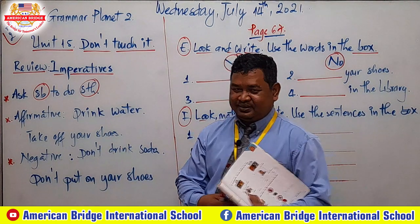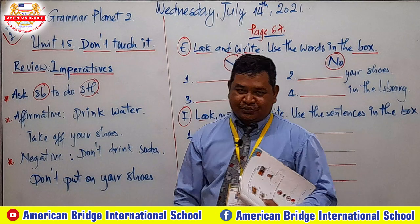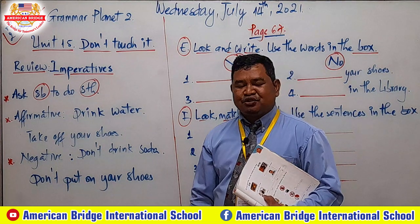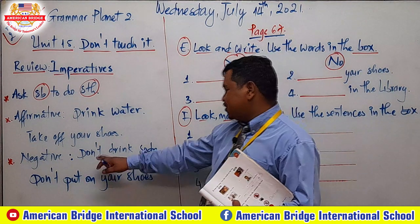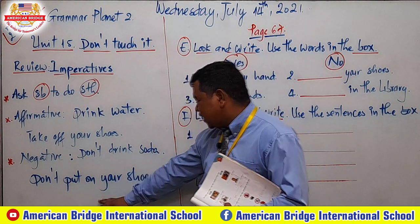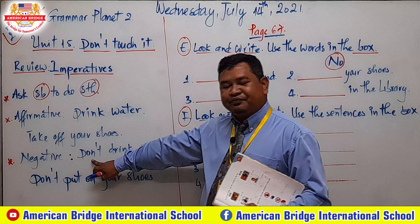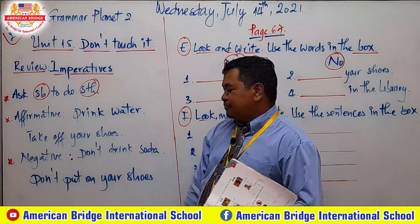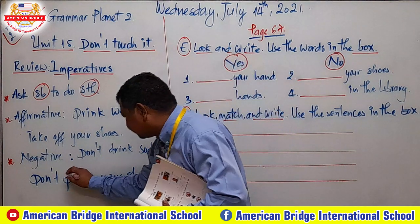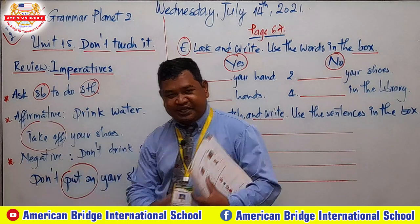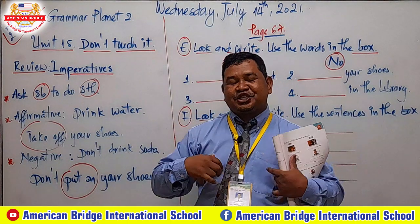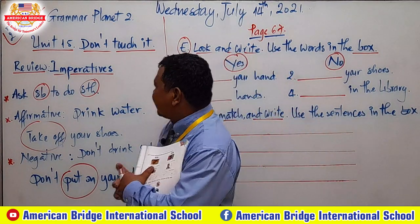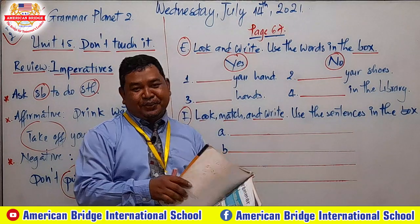For example, affirmative: 'Drink water', 'Take off your shoe.' For negative: 'Don't drink soda, you have to drink water.' 'Don't put on your shoe.' The word 'don't' comes from 'do not' — do not drink soda, or do not put on your shoe. 'Put on' is the opposite of 'take off.' You can take off your shirt or put it on. I have already explained imperative.